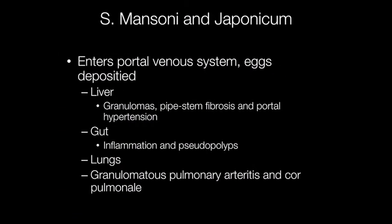In the Mansoni and Japonicum types of Schistosomiasis, the worms enter the portal venous system. The eggs are deposited in the liver, causing granulomas and pipe stem fibrosis, resulting in portal hypertension. In the gut, there is inflammation and pseudopolyp formation, and the eggs may make their way into the lungs, causing granulomatous pulmonary arteritis and eventually cor pulmonale.